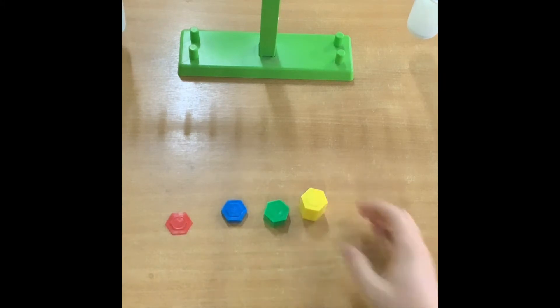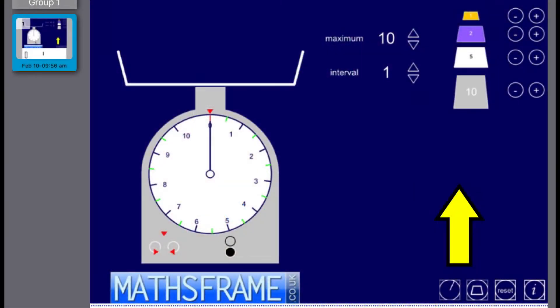What we're going to do now is have a look at what equipment we can use to measure weight. Here we have a set of weighing scales. You may have seen these before in your kitchen at home because a lot of adults will use these when they're baking or cooking. They tell us the weight of an object.